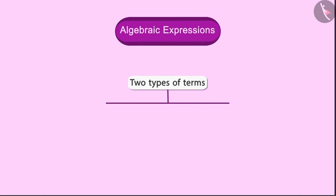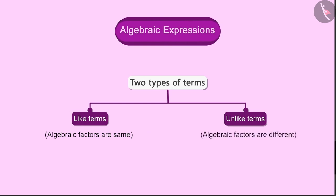Now that we have understood what are algebraic factors, let us try to understand the two types of terms: like term and unlike term. Two terms are said to be like terms when their algebraic factors are the same. And when the algebraic factors of the terms are not the same but different, then they are known as unlike terms.